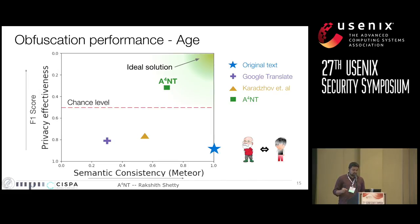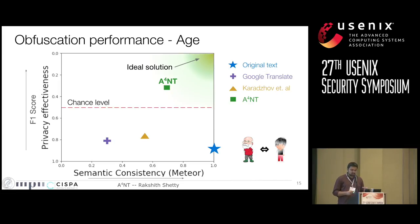Starting with the original text, shown as a star symbol in the bottom right corner, the adversary's F1 score is 0.85, meaning it correctly guesses the author's age most of the time. When you do obfuscation using prior works like round-trip translation with Google Translate or rule-based systems, privacy effectiveness improves only a little but there is a significant drop in semantic consistency. In contrast, when you apply ANT obfuscation, the point moves up quite a bit, indicating the adversary is no longer able to determine age — it's moved beyond the chance level line, meaning the adversary is only randomly guessing.